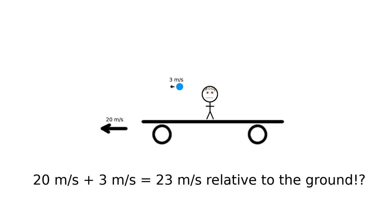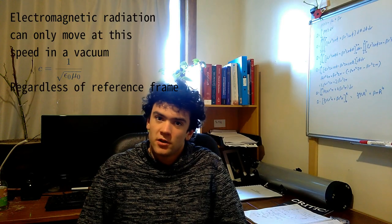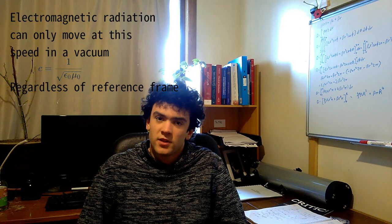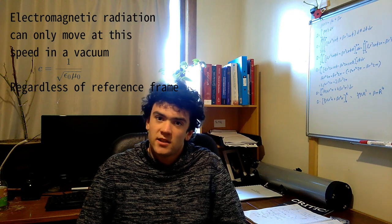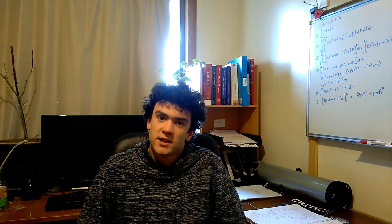Now, instead of throwing a ball, consider turning a torch on pointing down the axis of the train. Are the photons that the torch is emitting travelling at c plus 20 meters per second? Well, either Maxwell's equations are wrong, or velocities do not simply add. The latter turns out to be true.